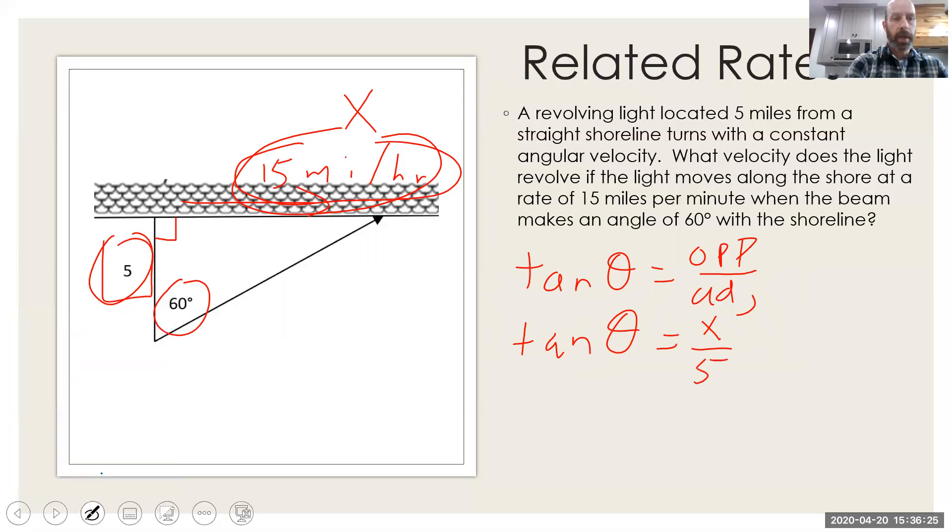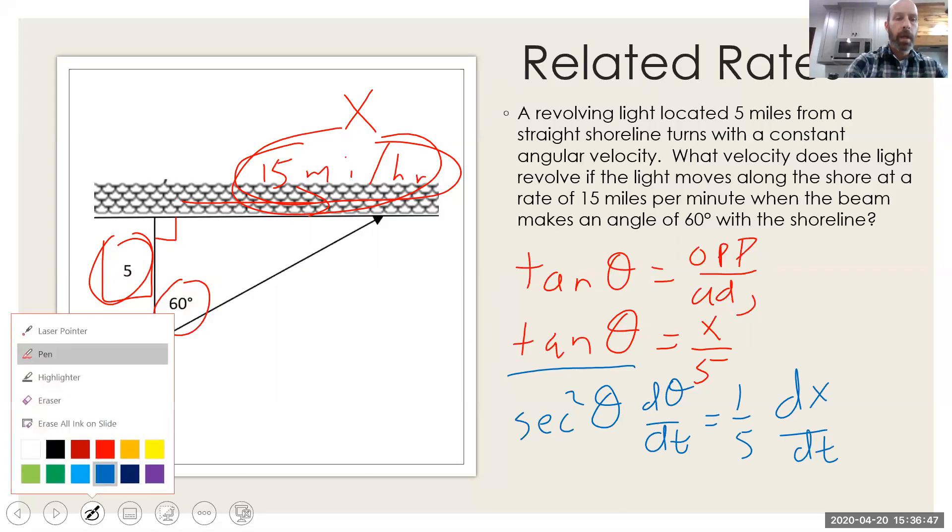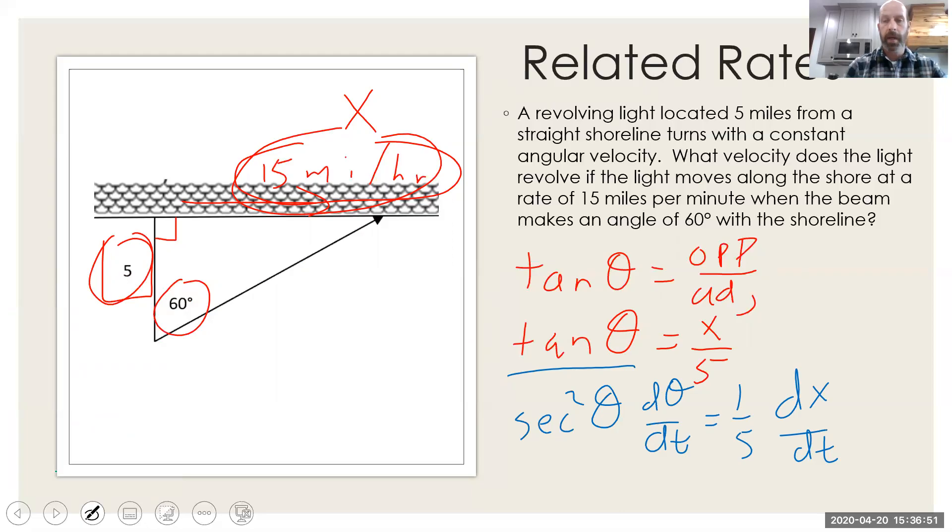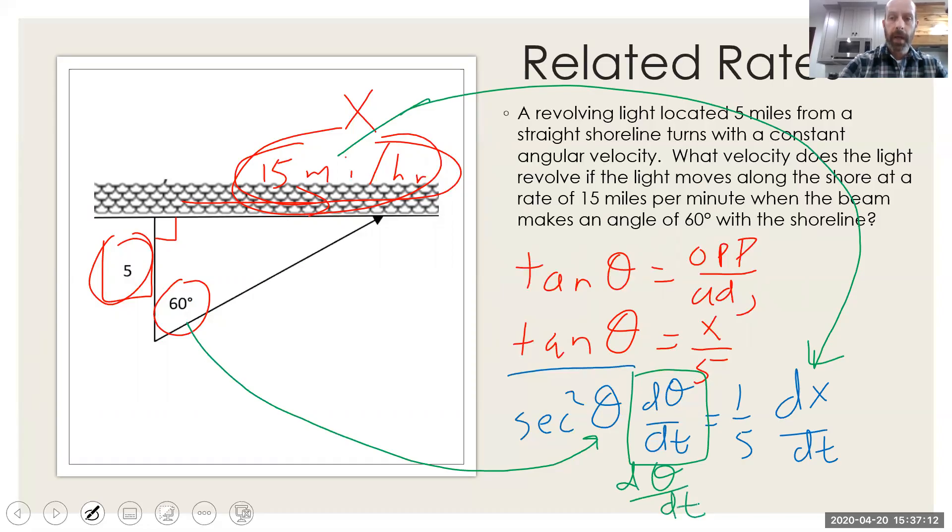So then what we're going to do, since this is a related rate question, is we're going to actually do the derivative. So the derivative of tangent theta, well, that would be secant squared theta d-theta dt. And then the derivative of the right-hand side is going to just be one-fifth dx dt. So at this point here, we've pretty much got it knocked out. We just got to plug and chug some things in here. First of all, we can put 60 degrees in for our theta. And then this amount right here is that dx dt. And the only thing left unknown is the d-theta dt, which again, I'm going to let you figure that out because that's what the question's asking for. I've done all the work in the setup, and we are at 12 minutes. So I'm going to stop there. So that is my quick review of units one through four.